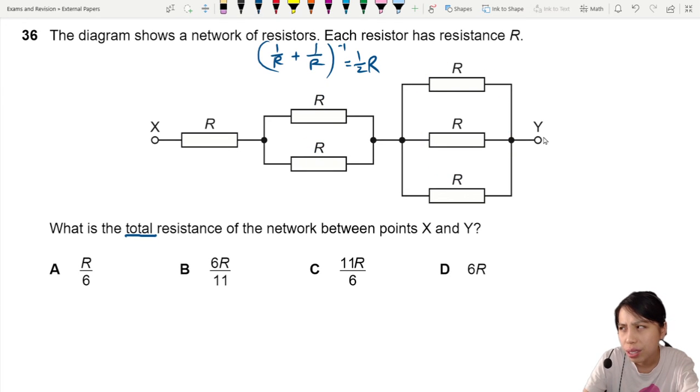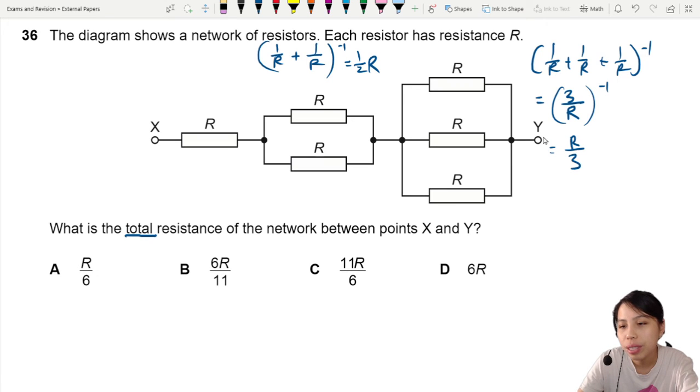So what happens if you combine 3? They become one third. But let's draw it out and write out the calculation. So this one, 1 over r plus 1 over r plus 1 over r, inverted. This will give us 3 over r, and when you flip it over, that's r over 3. So it's one third r.